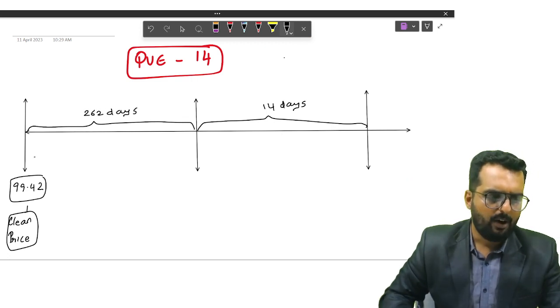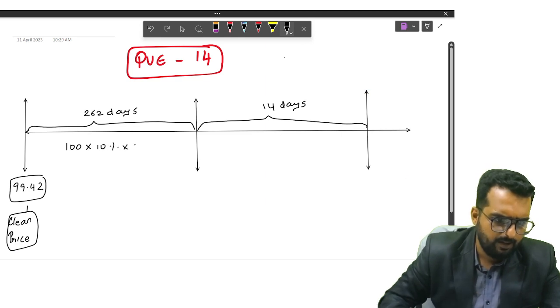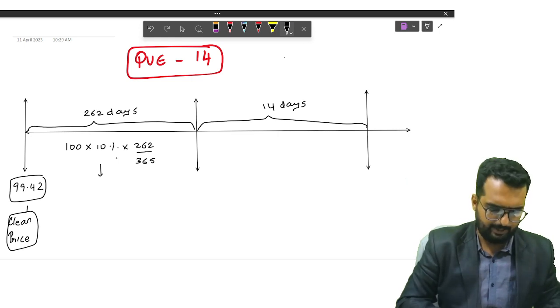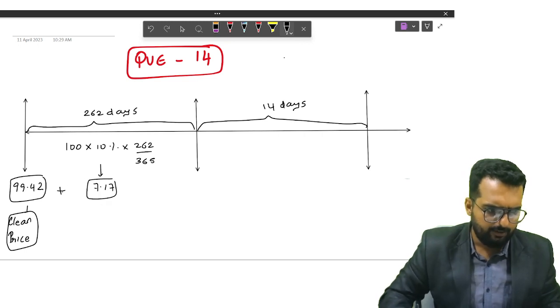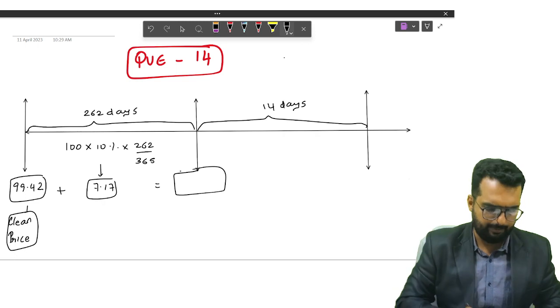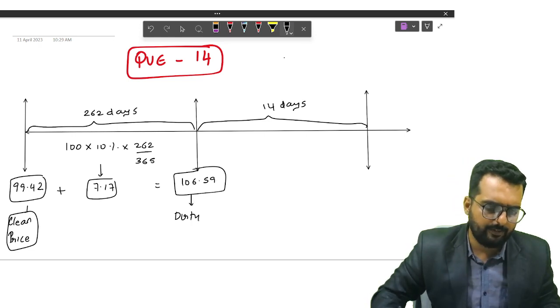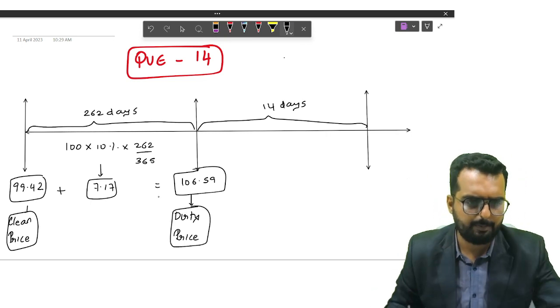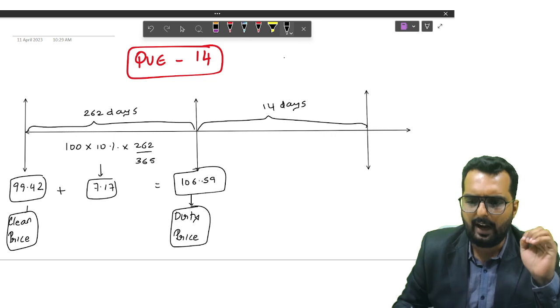What happens now is on 99.42 for 262 days, there is a coupon rate of 10 percentage, correct? If I do like this, I will get the coupon accrued for 262 days: 10% into 100 divided by 365 times 262. Do I get the answer as 7.17 over here? So this plus this will give you the dirty price: 99.42 plus 7.17 equals 106.59. This 106.59 is what you call it as the dirty price. What happens is they give loan actually based on this dirty price only.